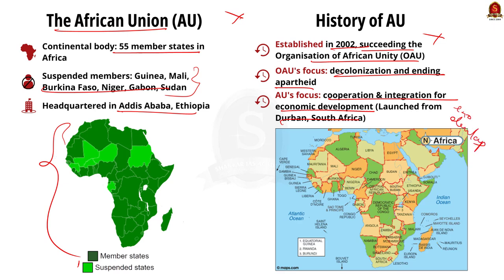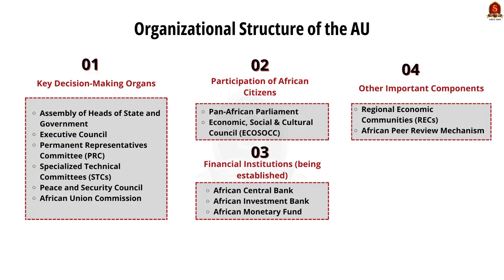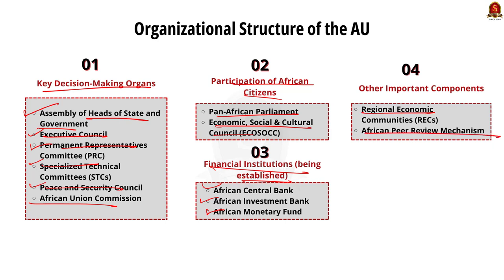The African Union has key decision-making organs including the Assembly of Heads of States and Governments, the Executive Council, the Permanent Representatives Committee, Specialized Technical Committees, the Peace and Security Council, and the African Union Commission. It also encourages participation of African citizens and civil society through the Pan-African Parliament and the Economic, Social and Cultural Council. Furthermore, the African Union is working to establish continental financial institutions like the African Central Bank, African Investment Bank, and African Monetary Fund. Regional economic communities and the African Peer Review Mechanism are also important components of the African Union structure.